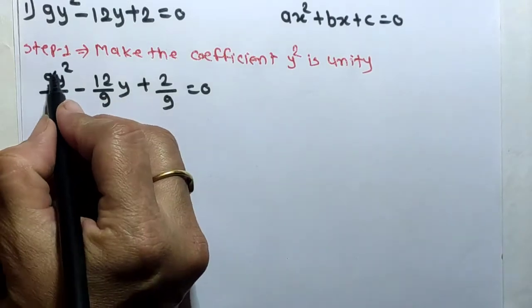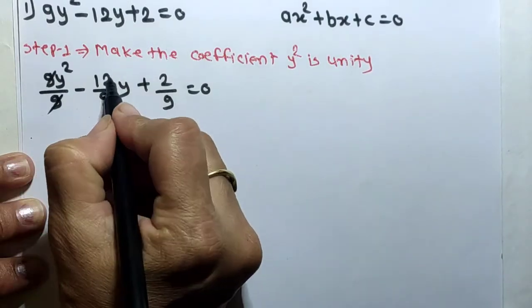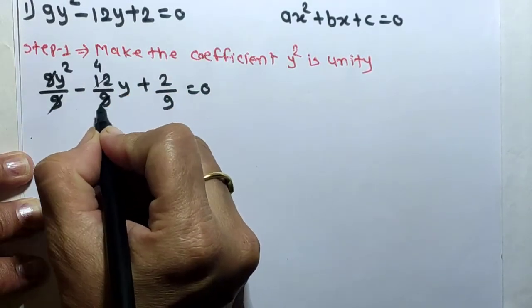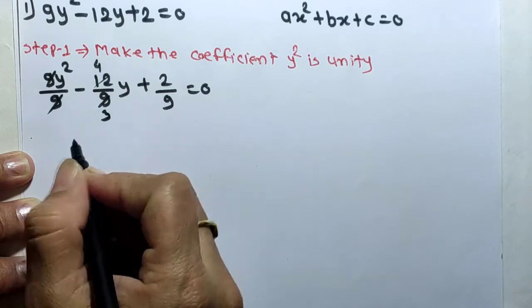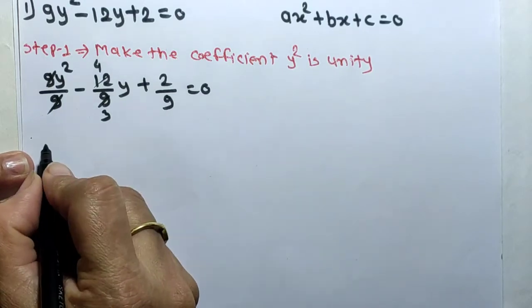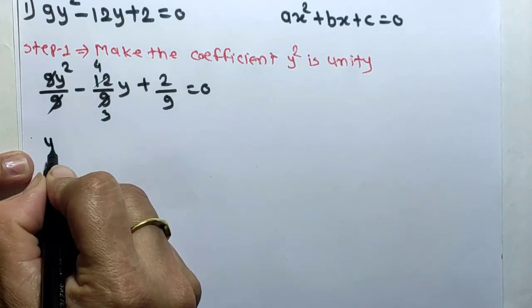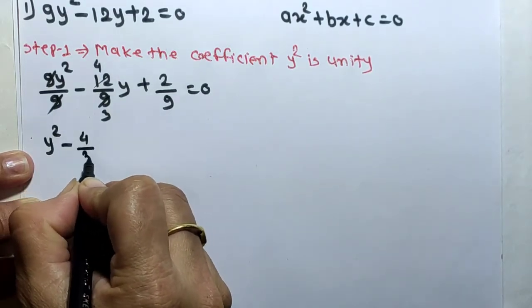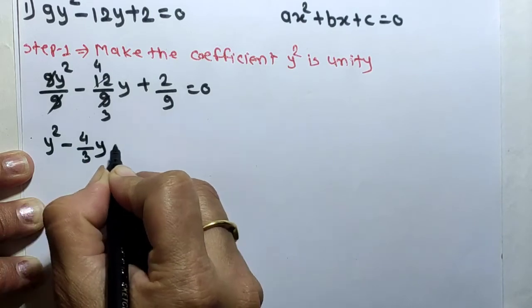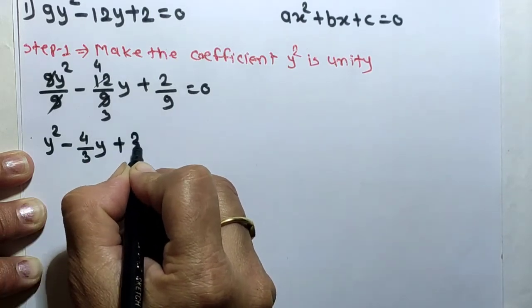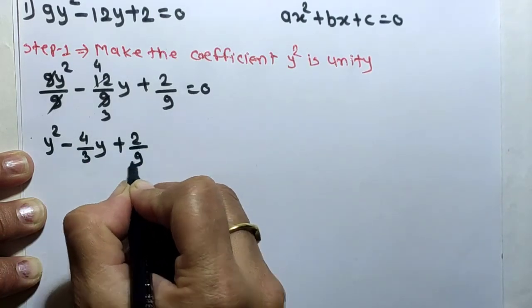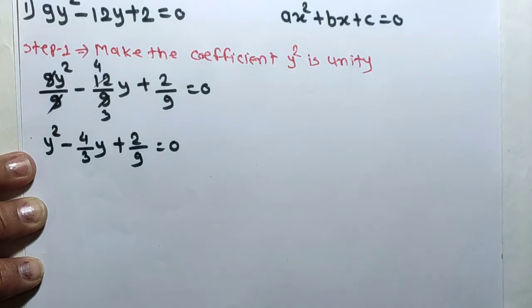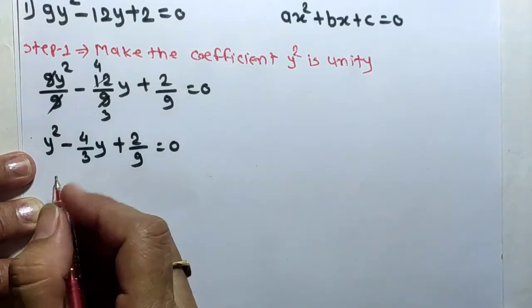After cancelling, 9 and 9 cancel. We can simplify 12/9 by dividing by 3, giving 4/3. So the equation becomes y² minus 4/3·y plus 2/9 equals 0. This completes our first step.